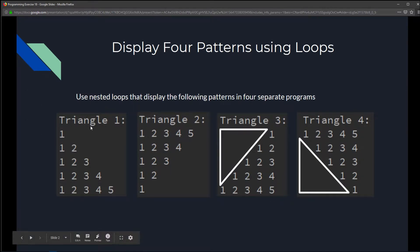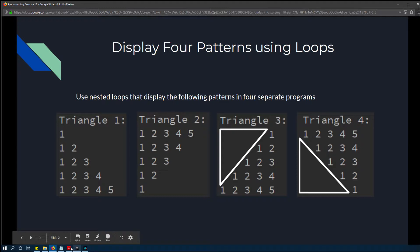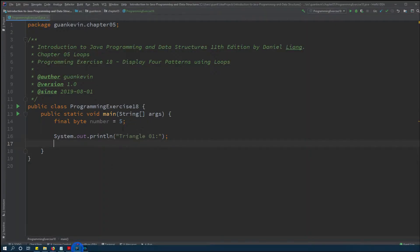We're going to start with triangle 1. We'll just use 2 for loops to design this. The outer for loop will be the rows. The second for loop will handle what gets printed in each row.